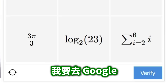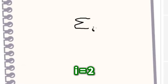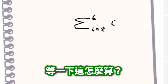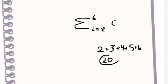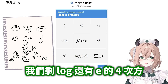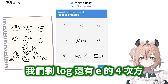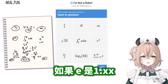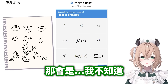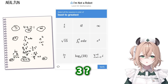Log — how do you do log? I have to Google it. And there's a summation: i equals 2 to 6. How do you solve this? 2 plus 3 plus 4 plus 5 plus 6 — is that right? 20, final answer. We've got the log and e to the 4th, which would be like not that big — maybe 2 or 3.